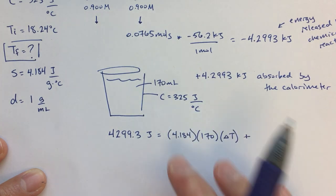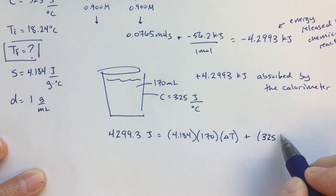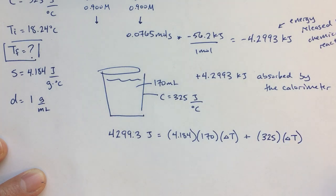So the heat capacity for the calorimeter is 325 joules over a degree Celsius. So that's going to have to change temperature as well. And we're going to assume that that has the same initial temperature. So now I'm going to solve this equation for delta T.